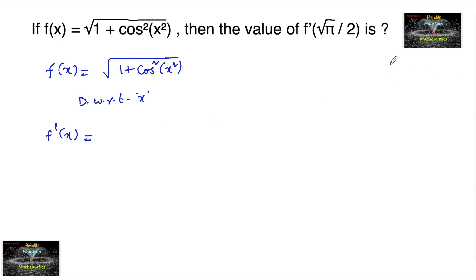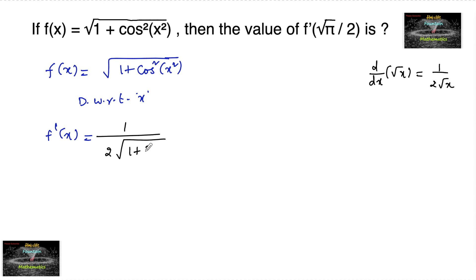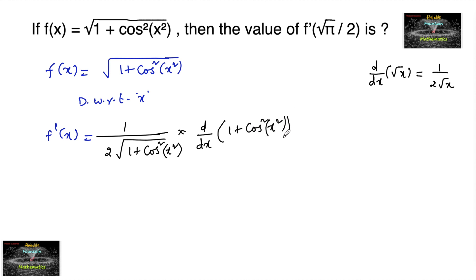Since we know that the differentiation of √x is 1/(2√x), let us apply that here: 1 over 2√(1 + cos²(x²)), and again using the chain rule, differentiate d/dx of (1 + cos²(x²)).